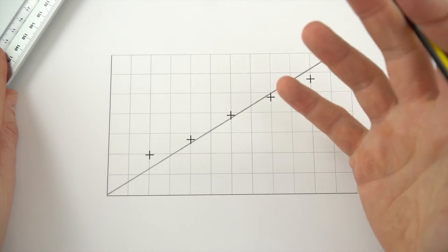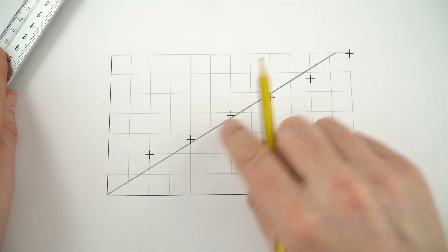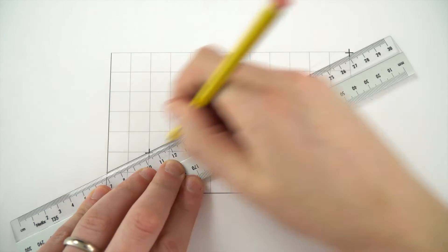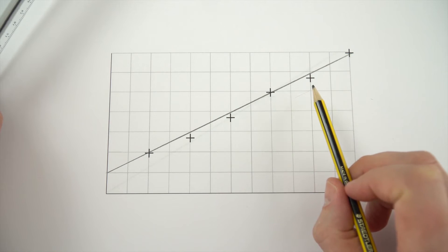Now sometimes, depending on the kind of data that you've taken, it might be more appropriate to have a line of best fit that hits the y-axis at some point. So for this data, this might be a more appropriate line of best fit.